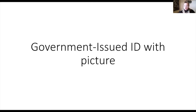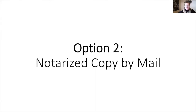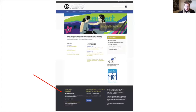To do so, you have two options. Option number one is to come physically to the Law Society of Nunavut office with the original identification document — the LSN administrator will make a copy of that document themselves. Option number two is to send a notarized copy by mail. You will find the complete address of the Law Society of Nunavut on our website under the contact tab.